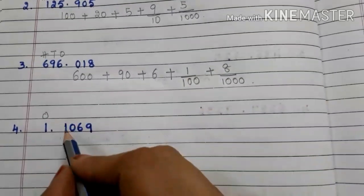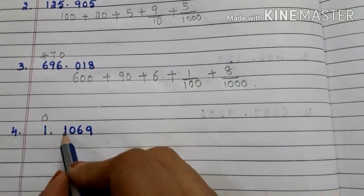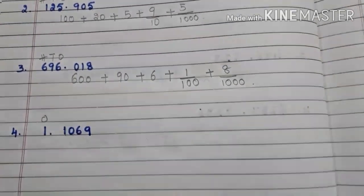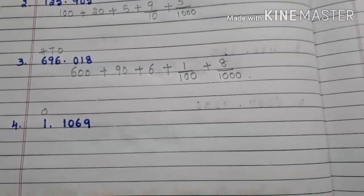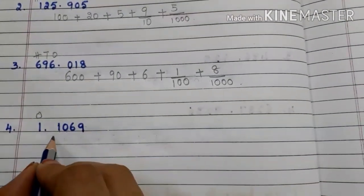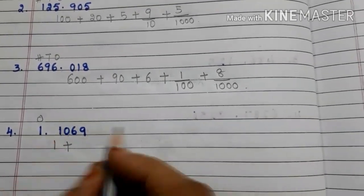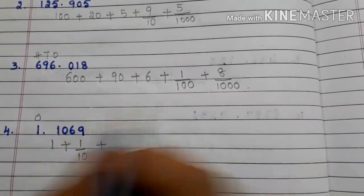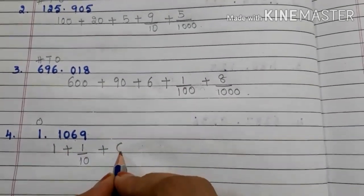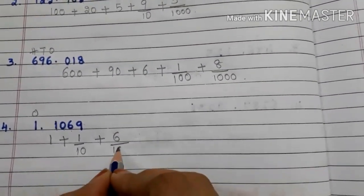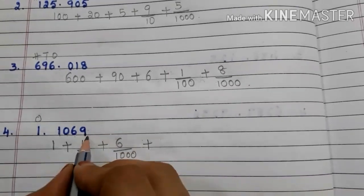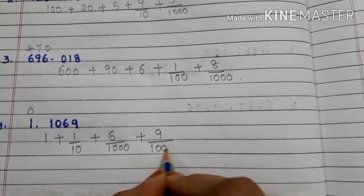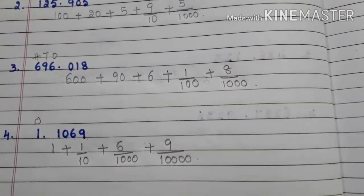Coming to the decimal part: this 1 is in the 10ths place, 0 is in the 100ths place, 6 is in the 1000ths place, 9 is in the 10,000ths place. Now write the expanded form: 1 plus 1 by 10 — no need to write 0 — plus 6 by 1000, plus 9 by 10,000.